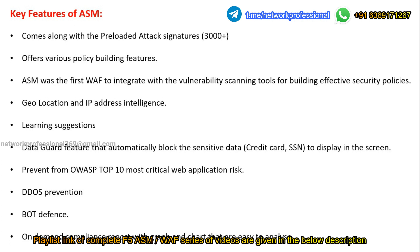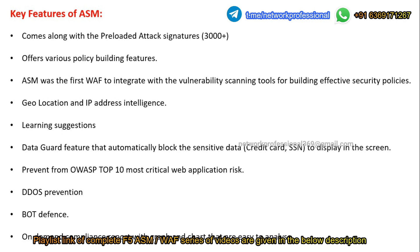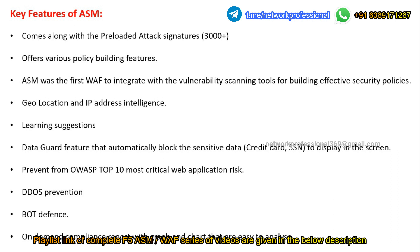ASM also provides geolocation and IP address intelligence. For example, if you want to block or prevent any requests from coming to your application from a particular country, you can do that. You can block traffic based on particular geolocations — a particular country, particular content, and so on. If you want to prevent users from a particular country from hitting your application, yes, you can block it. This is called geolocation. ASM also gives learning suggestions, and based on those suggestions, we can build an effective security policy.